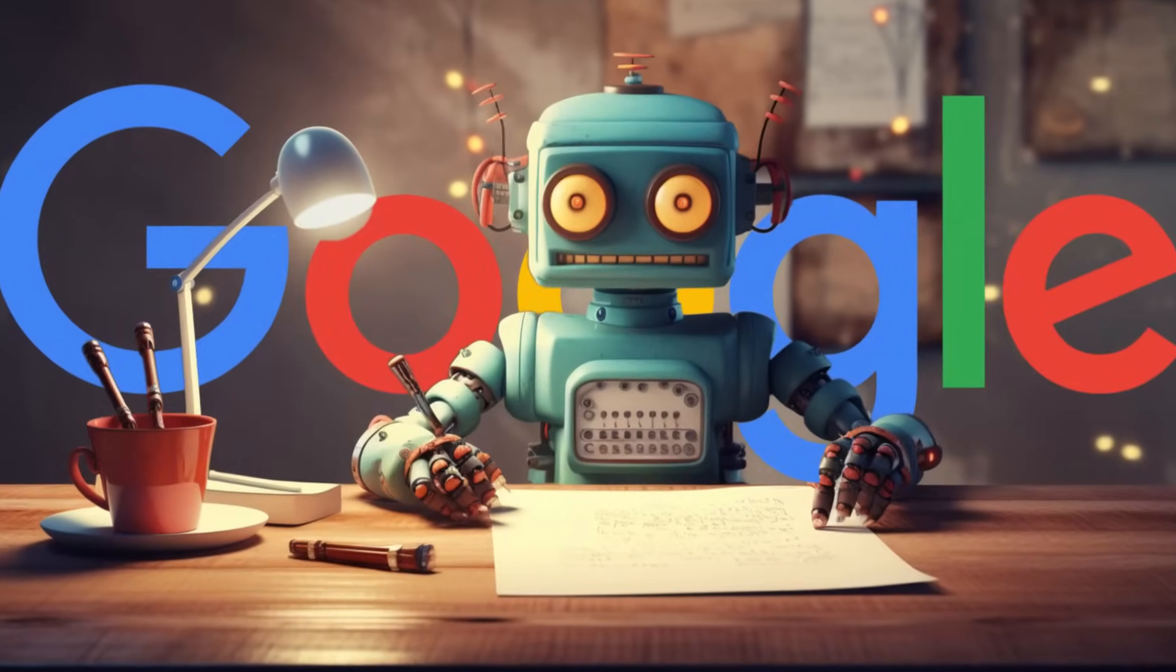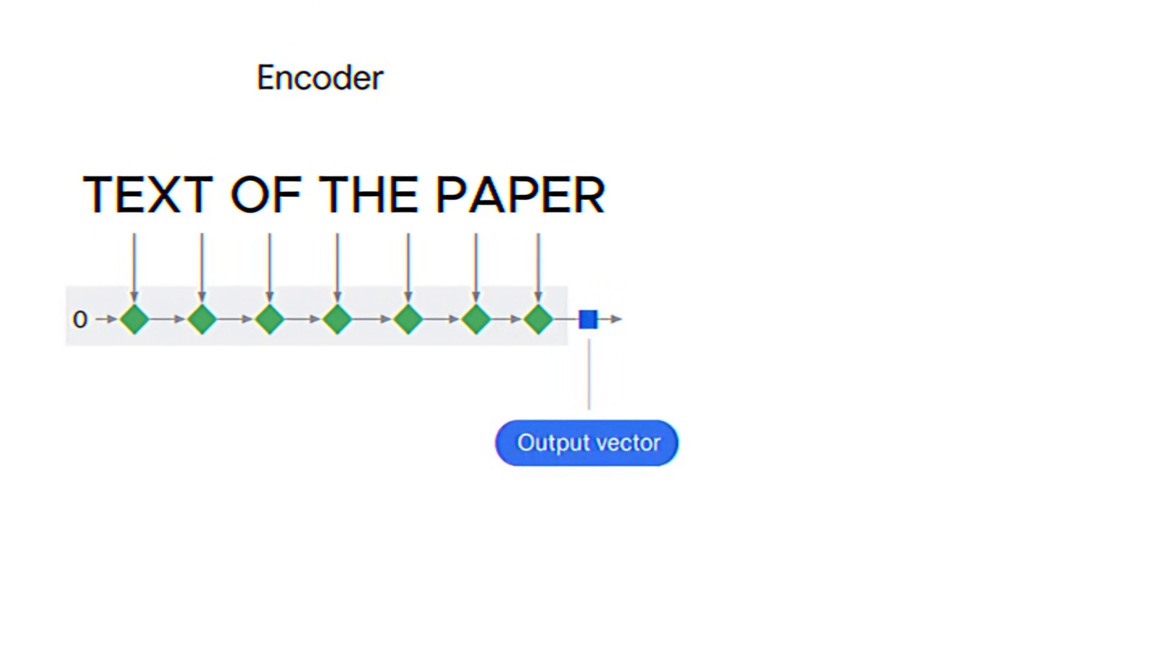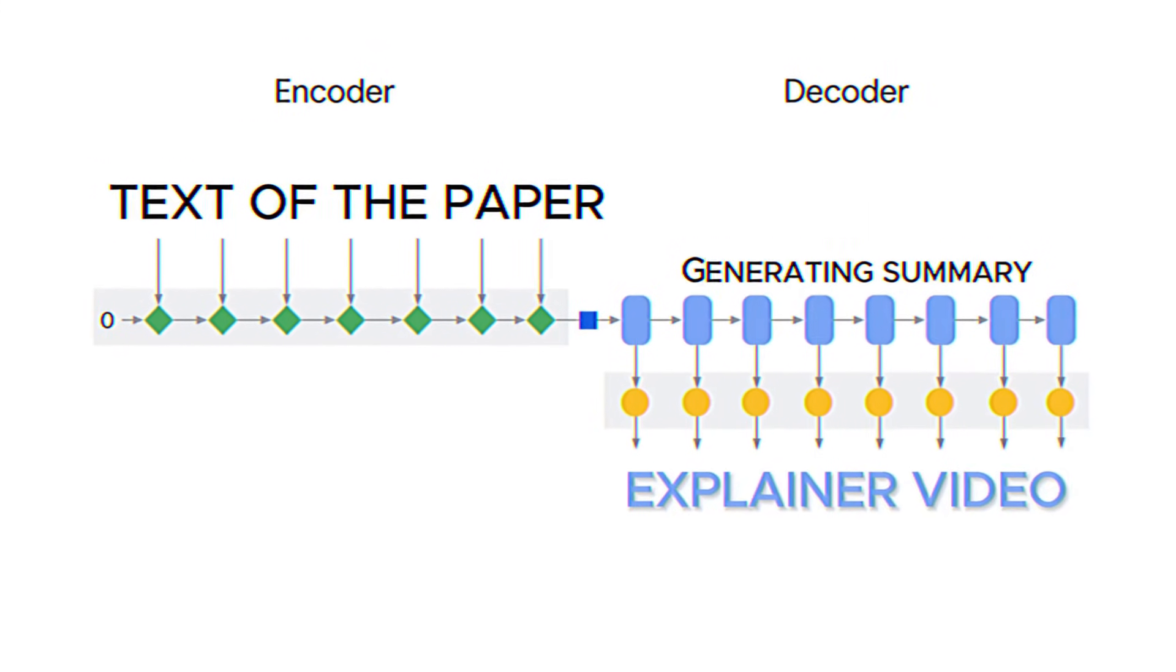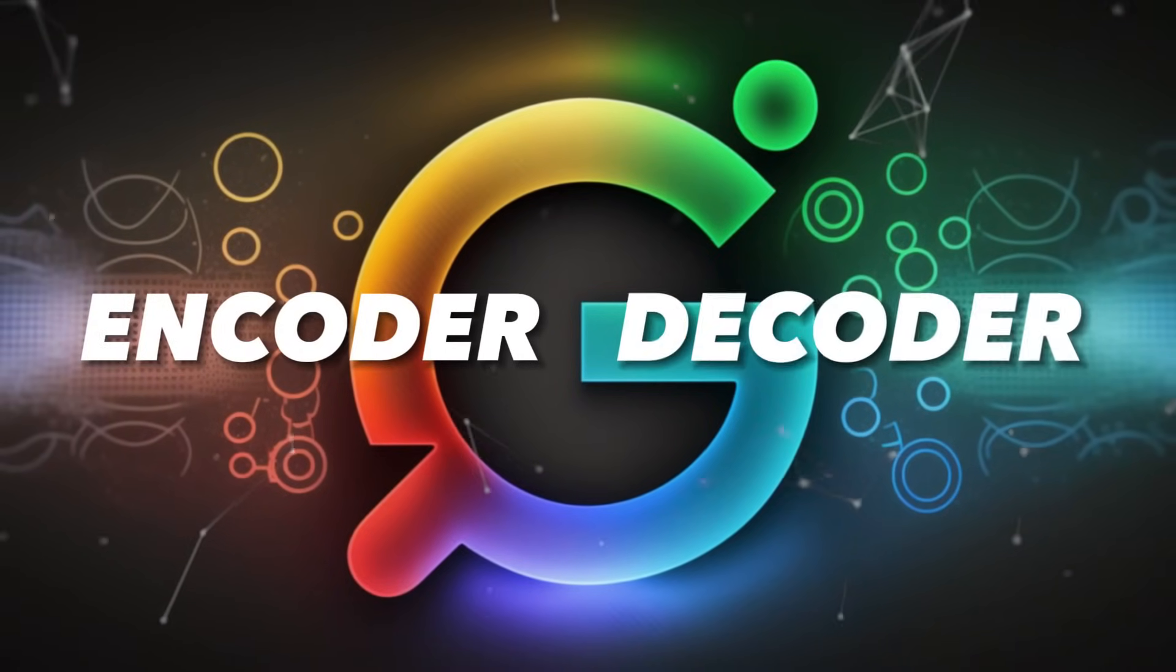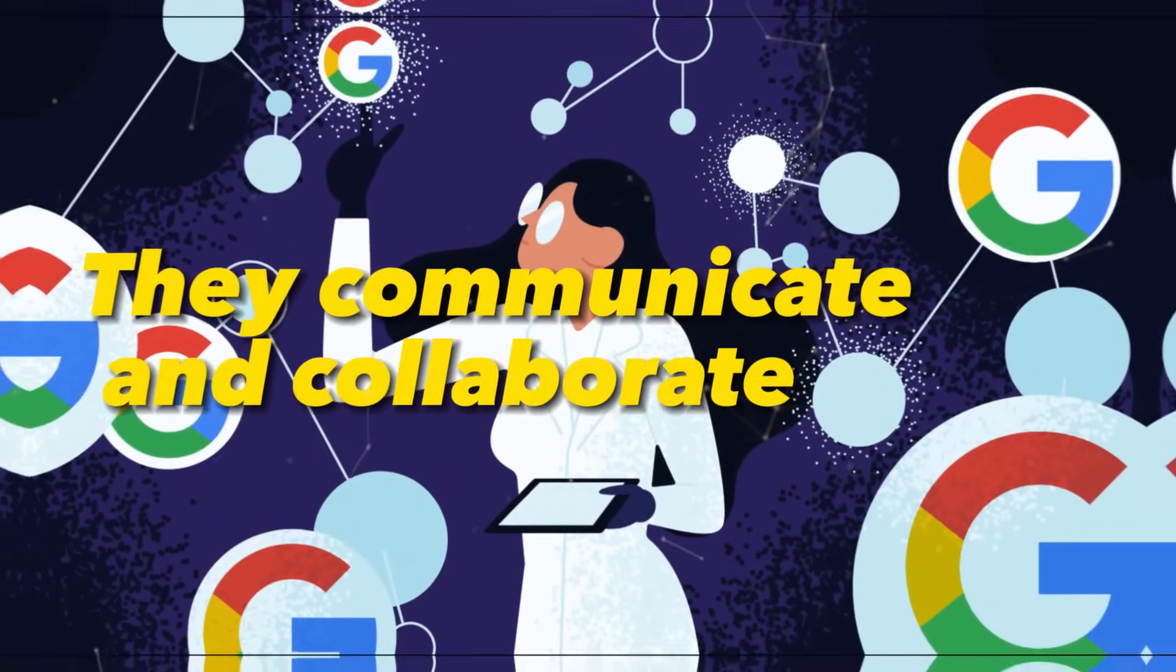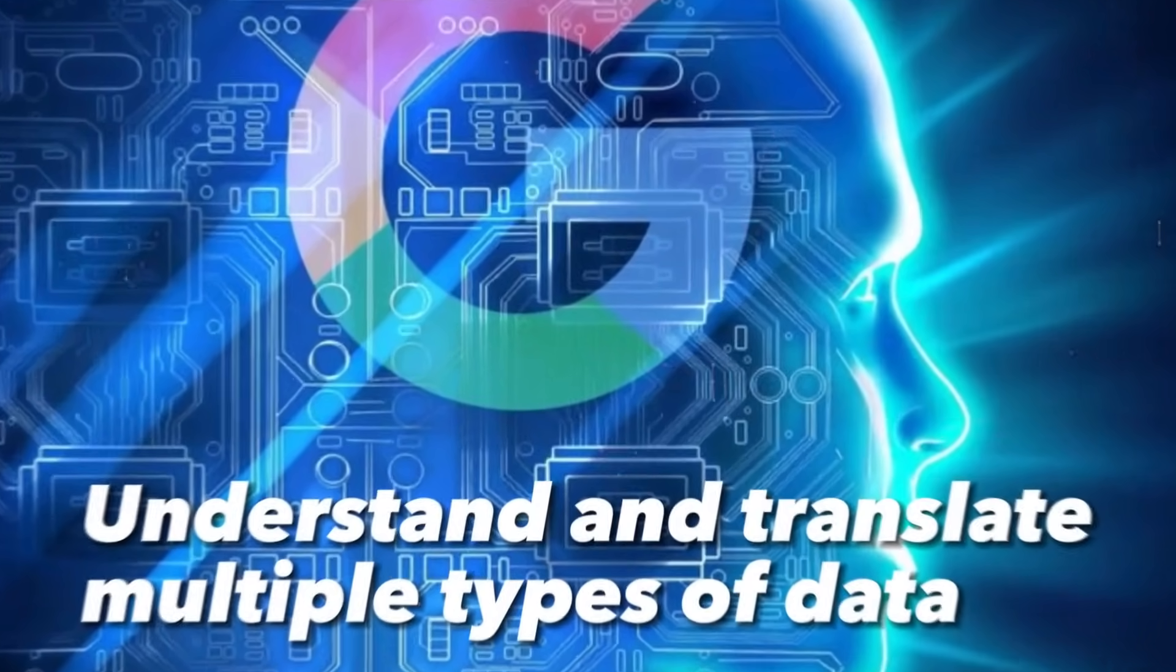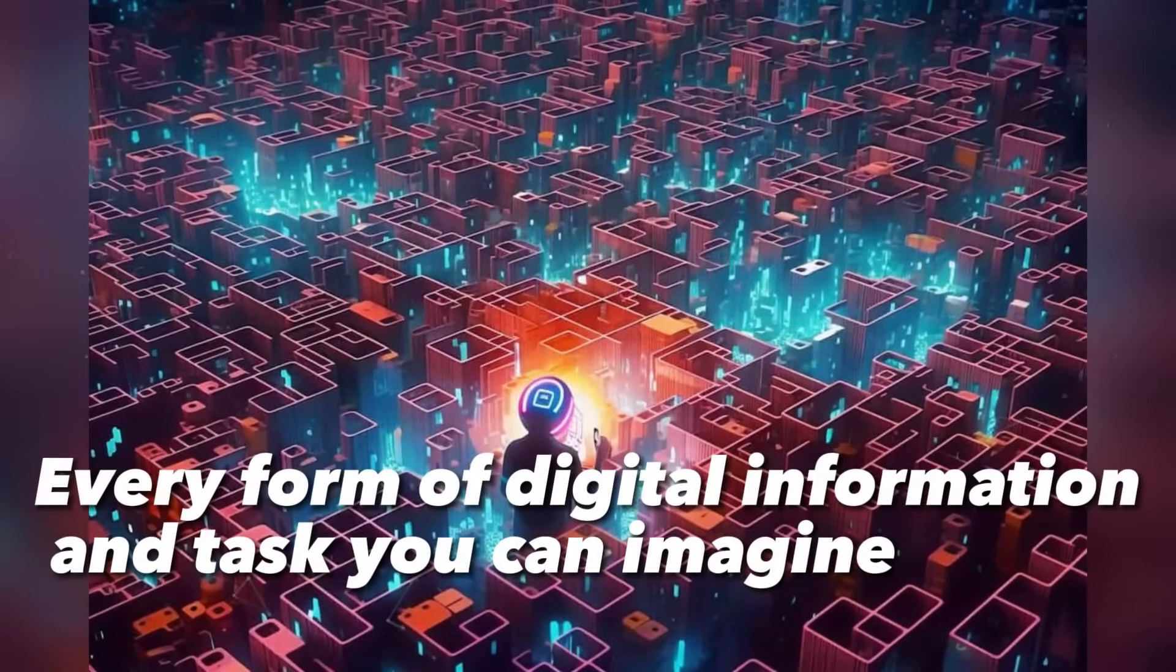Imagine asking Gemini to summarize a scientific paper. The encoder would first convert the text of the paper into its universal language. The decoder could then generate a concise summary in text form, create an infographic highlighting the key points, or even produce a short explainer video, all depending on your preference. What makes Gemini truly revolutionary is the synergy between the encoder and the decoder. They're not isolated components, but part of a cohesive network. They communicate and collaborate, allowing Gemini to handle tasks that would typically require multiple specialized models. It's this ability to understand and translate multiple types of data that makes Gemini akin to a universal translator, but for virtually every form of digital information and task you can imagine.